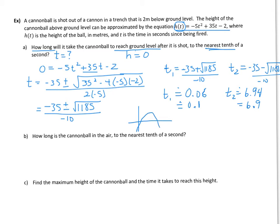So what's happening here is the cannon is down in a trench, so this is the ground level right here, the x-axis is your ground level. It's being shot out of the trench up and over into the enemy lines there. So my two values are both positive. This one here is how long will it take the cannonball to reach ground level after it is shot. So it goes up, it hits ground level 0.1 second after being shot, and goes up to its maximum and comes back at 6.9 seconds. So how long is the cannonball in the air to the nearest tenth of a second? It would be in the air for 6.9 seconds.